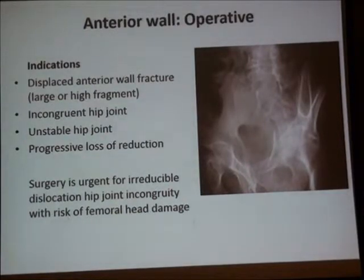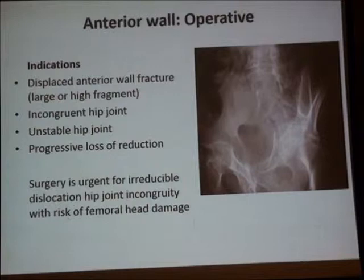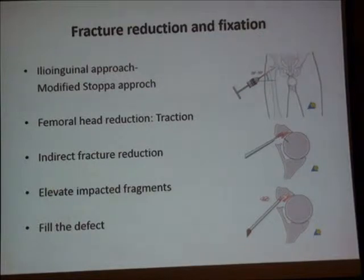This injury is unstable and disrupts the stability and congruity of the hip joint; it is an indication for surgery. A displaced anterior wall fracture with incongruent or unstable hip joint, or progressive loss of reduction, are all indications for internal fixation with anatomical reduction. The approach is ilioinguinal or modified Stoppa approach. We attack from anterior and reduce the hip joint with longitudinal and lateral traction to unload the fracture site.